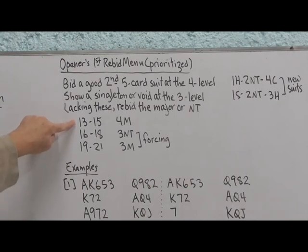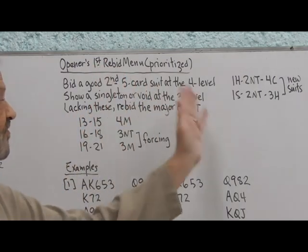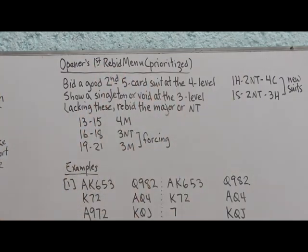With the minimum one-level opening hand, we jump to four of the major. So the bidding would go something like one heart, two-no-trump, four hearts. That's the principle of fast arrival also, the idea that we jump with weaker hands and go more slowly with stronger hands.